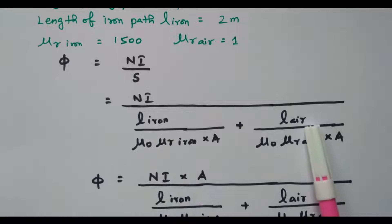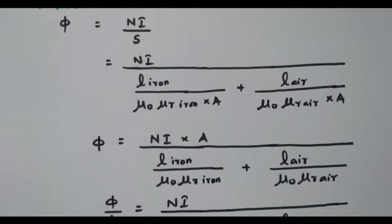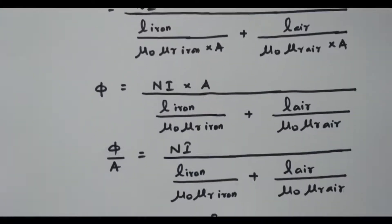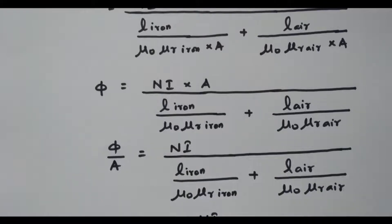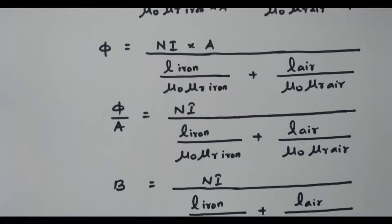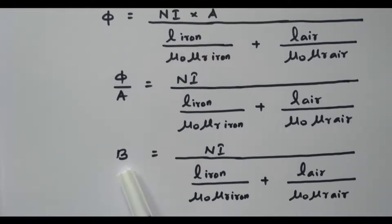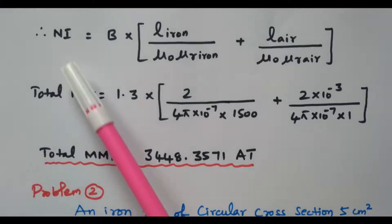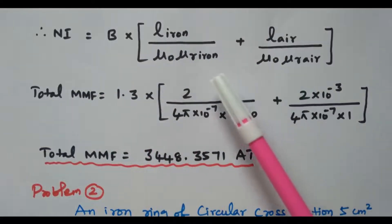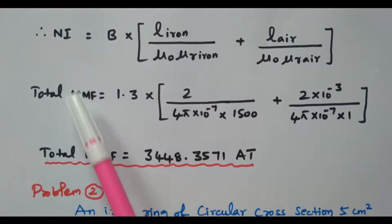This formula applies separately for iron and for air. Since the cross-sectional area A is common to both, it can be brought into the numerator. After rearranging, φ divided by A — which is flux per unit area, i.e., flux density B — equals NI divided by the combined reluctance. So B equals NI over reluctance, which gives NI equal to B multiplied by the reluctance. NI is the total magnetomotive force, which is our aim to find.